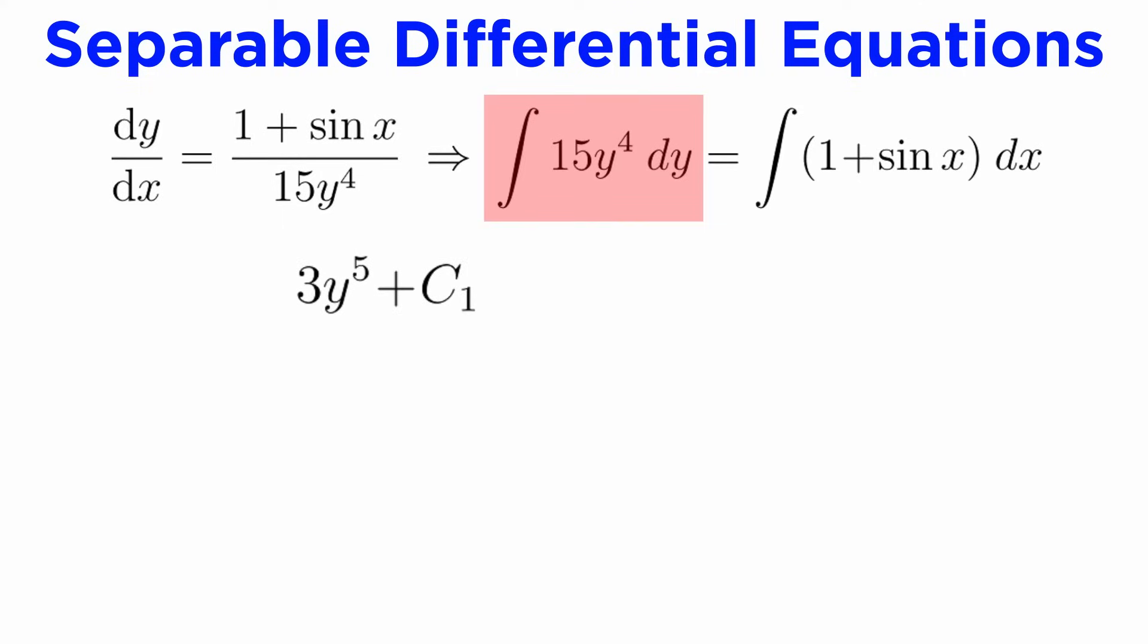On the left we'll use the power rule to get 3y to the fifth plus an arbitrary constant, call it c1. On the right, recall that the integral of sine is negative cosine, so we get x minus cosine of x plus another arbitrary constant, call it c2.